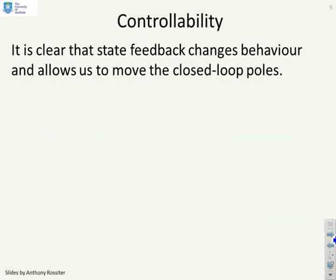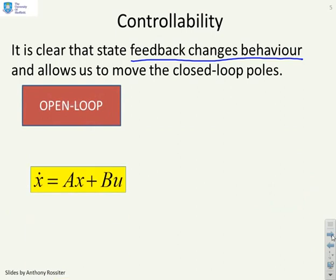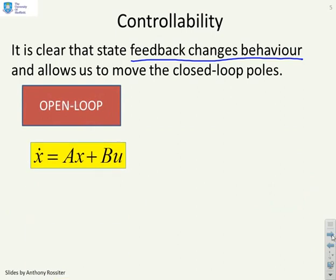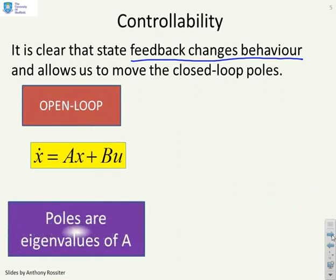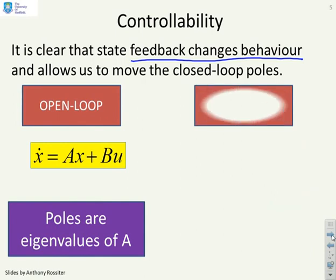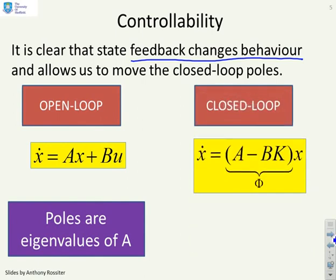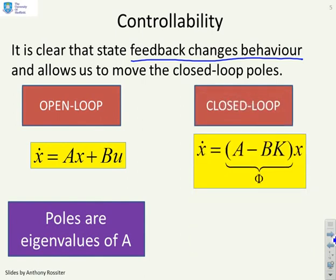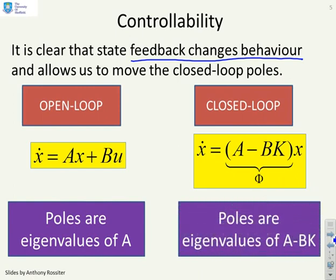Now, controllability. It's clear that state feedback changes behavior and allows us to move the closed-loop poles. In the open-loop, the poles are the eigenvalues of A. In the closed-loop, we have x dot equals (A minus BK) times x, and the poles are the eigenvalues of A minus BK. So we've changed the pole positions.